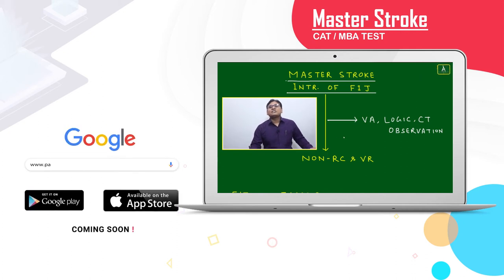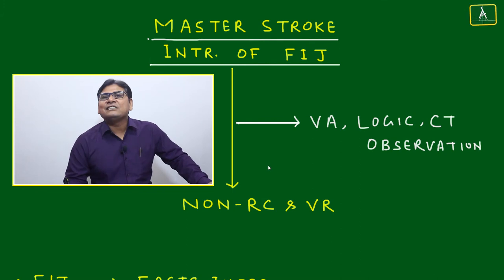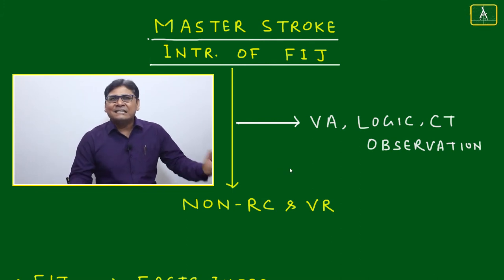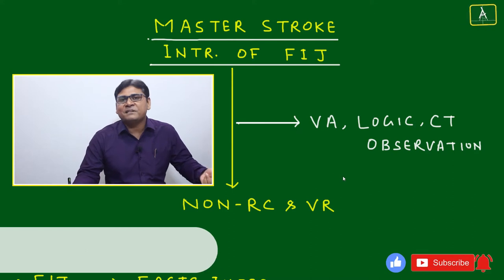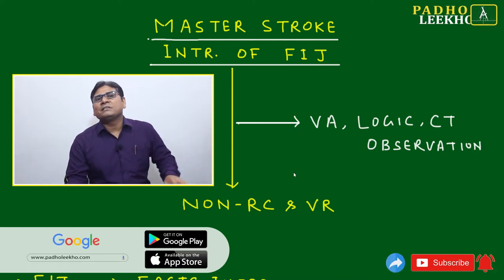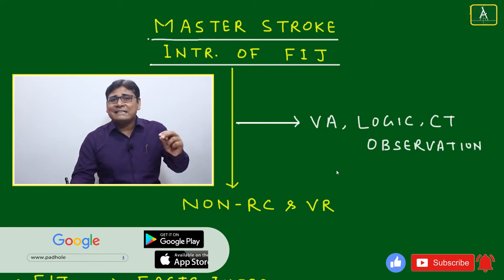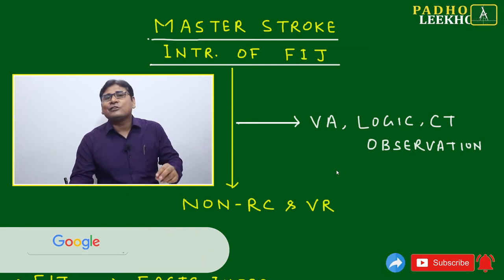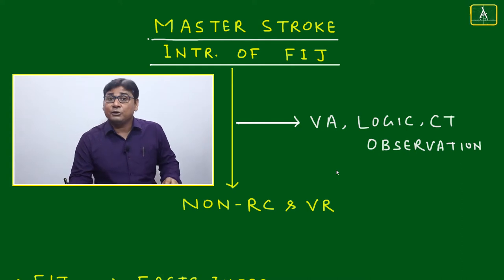Welcome to the master's talk. In this session, I am going to discuss the FIJ — Facts, Inference, and Judgment. This is just an introduction to FIJ. FIJ is the checking of any statement made by any person or any observation that has been written, to determine whether that statement is a fact, an inference, or a judgment.